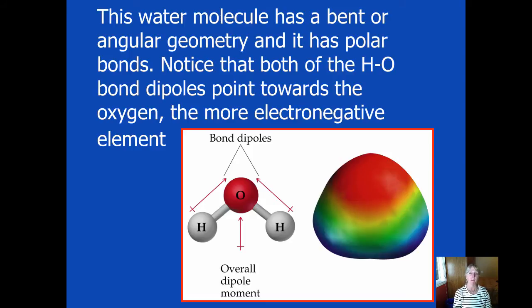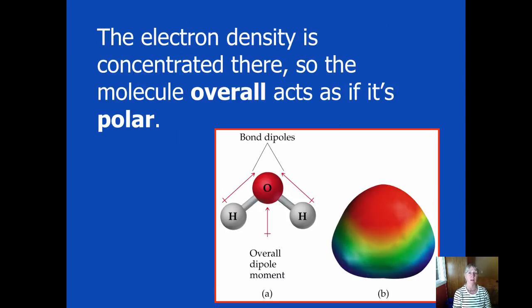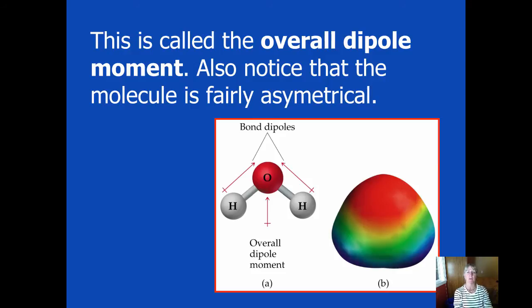So this is both having bond dipoles as well as the entire molecule is polar overall. So remember, where the electron density is being concentrated, that's where the overall polarity can be determined. Sometimes you'll see that referred to as an overall dipole moment. And because it's asymmetrical, bent, and it's got two pairs of unshared electrons on the oxygen, it has both polar bonds, as well as an overall dipole moment, meaning that it's a polar molecule.